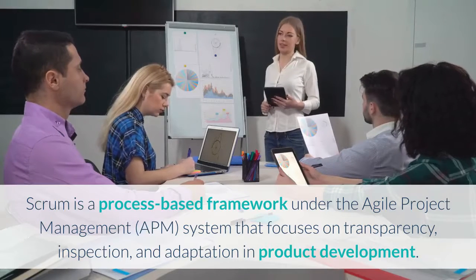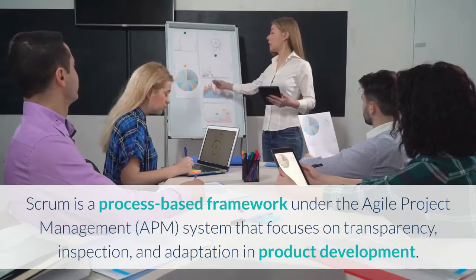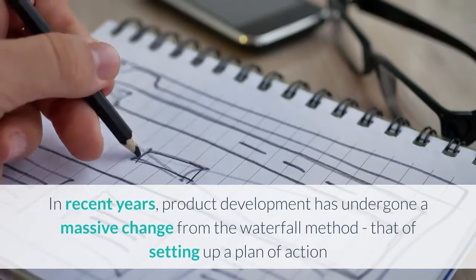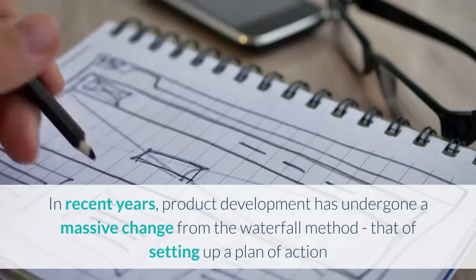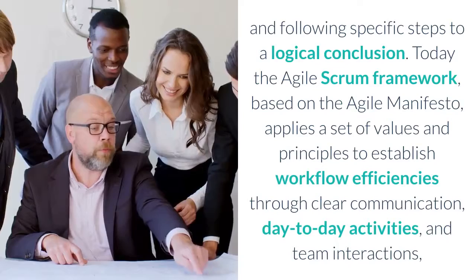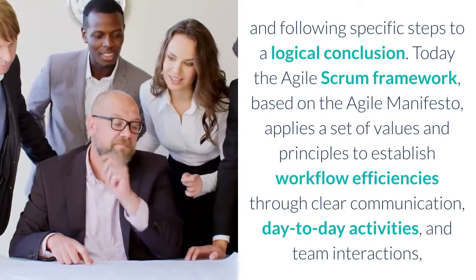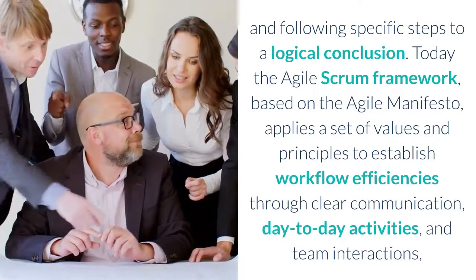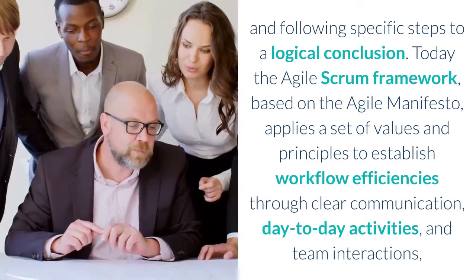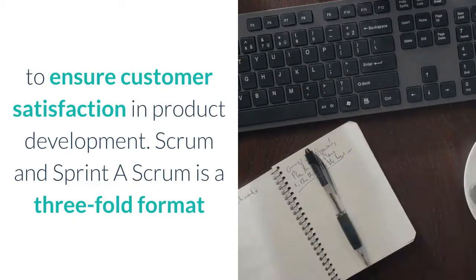Scrum is a process-based framework under the Agile Project Management system that focuses on transparency, inspection, and adaptation in product development. In recent years, product development has undergone a massive change from the waterfall method of setting up a plan of action and following specific steps to a logical conclusion. Today the Agile Scrum framework, based on the Agile Manifesto, applies a set of values and principles to establish workflow efficiencies through clear communication, day-to-day activities, and team interactions, to ensure customer satisfaction in product development.